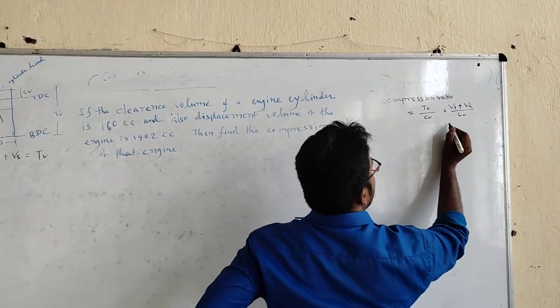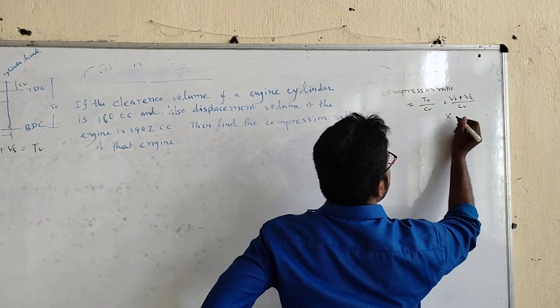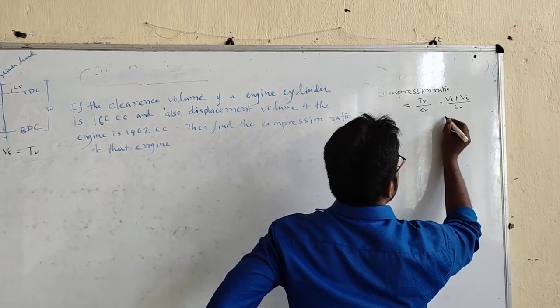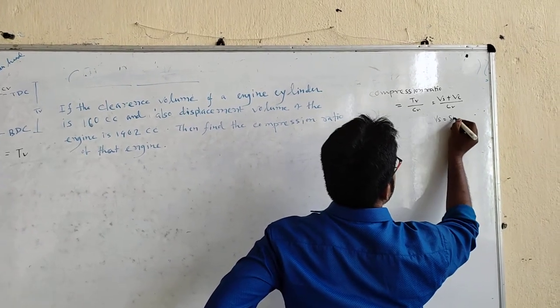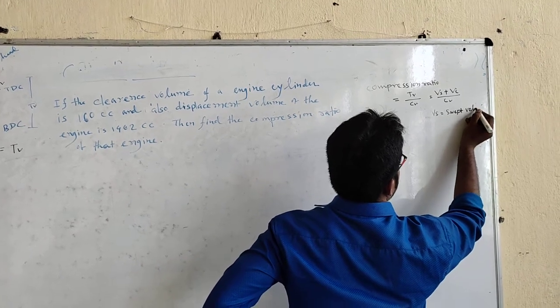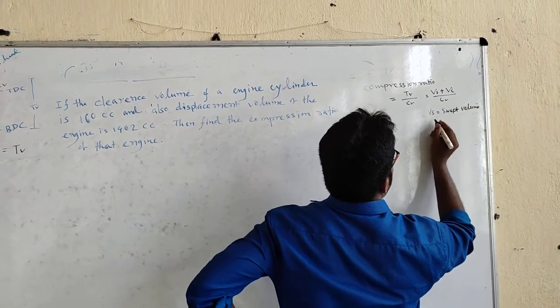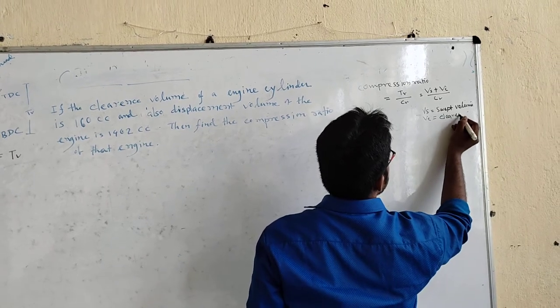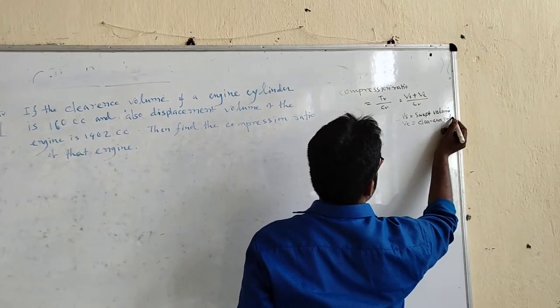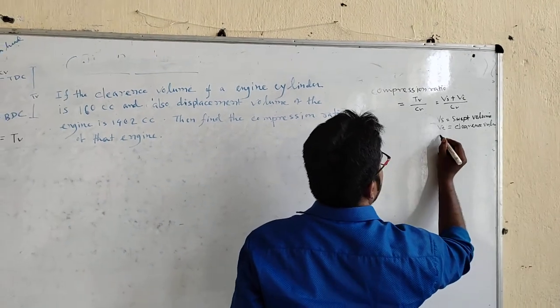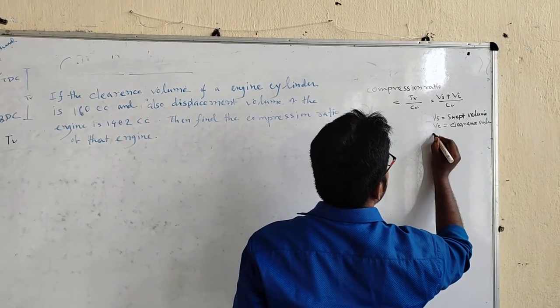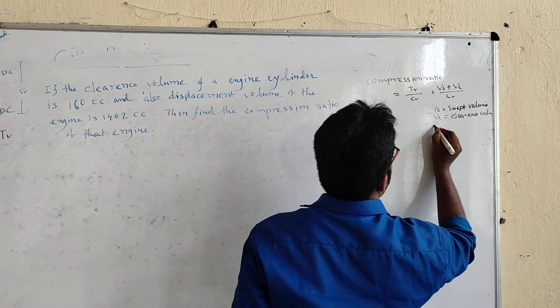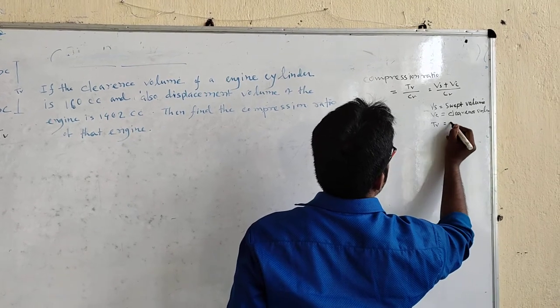VS is called swept volume, VC is called clearance volume, and VT is called total volume.